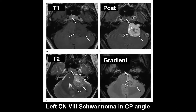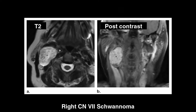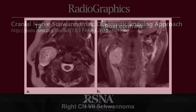The paper in the current issue of Radiographics by Dr. Aaron Skolnick and the group at the University of Pennsylvania highlights the characteristic features of cranial nerve schwannomas and the role of imaging in treatment planning for affected patients. The article can be found at the following link.